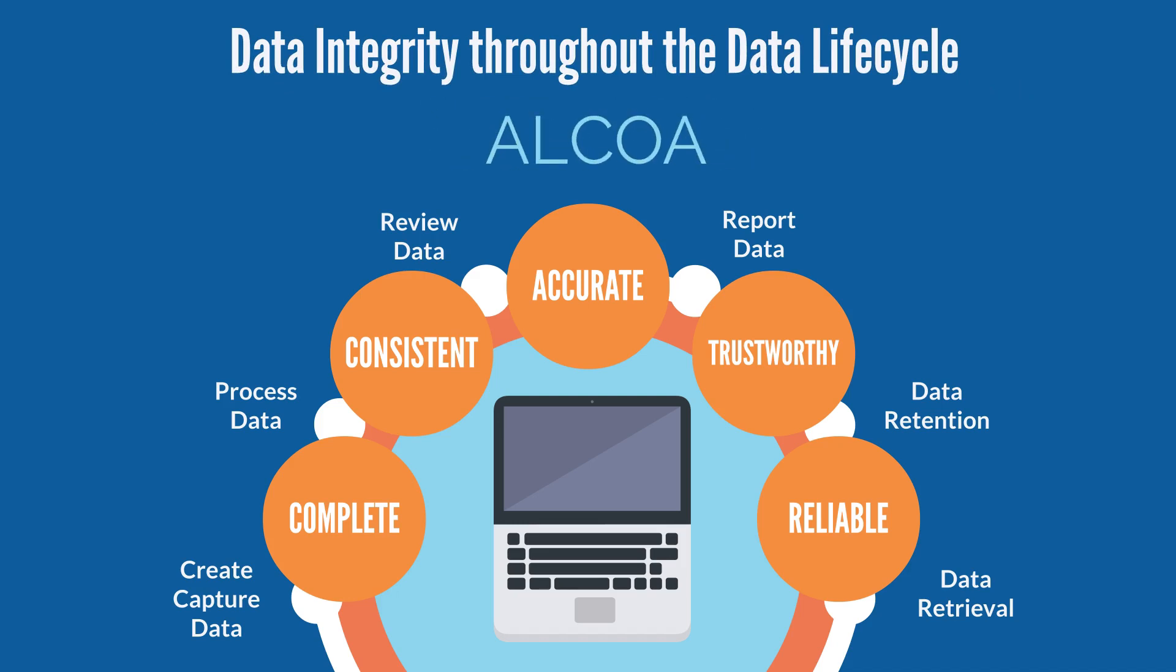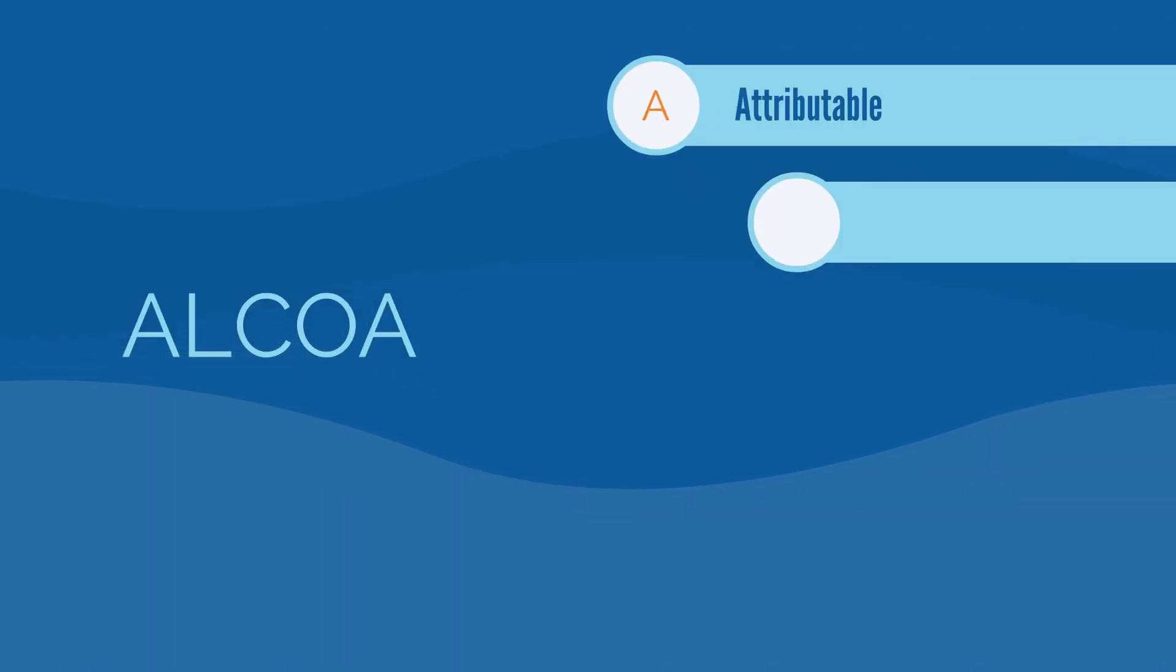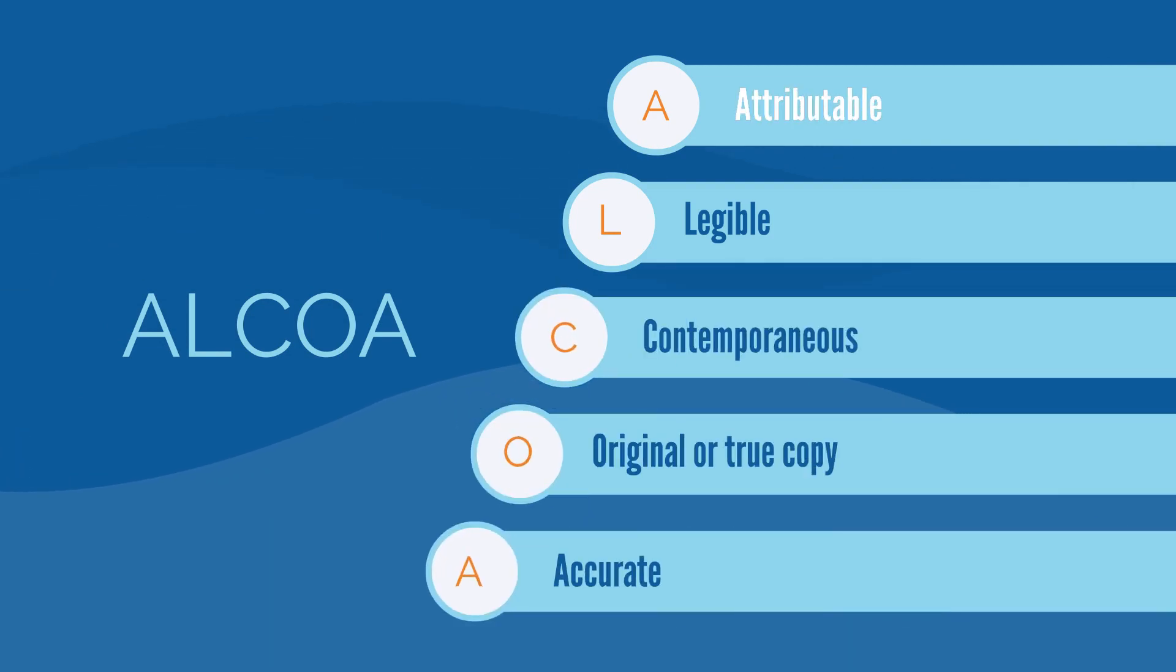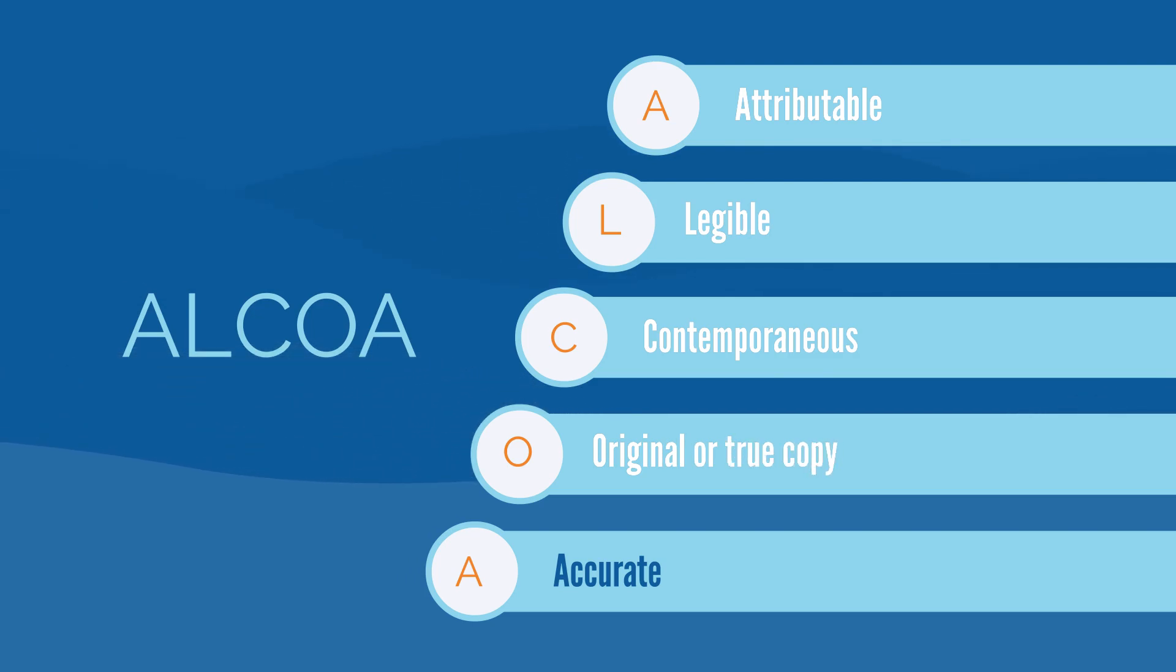And to achieve this, your data needs to be created in line with ALCOA. Alcoa is that your data is A—Attributable, so we know who it was that did the work. L—Legible, so we can actually read whatever it was that a person or a machine recorded. C—Contemporaneous. This is a slightly more difficult word, but it means that the record reflects the date and time it was made, and that in turn reflects the date and time the work was done. O stands for original, or we allow true copy. Original means it's the first time that the recording was made, and true copy means it's a tested copy that ensures that the copy is exactly the same as the original, which is maintained in the format it was originally created in. The final A is for accurate, and we already know that this means it's the truth, it is the correct answer.